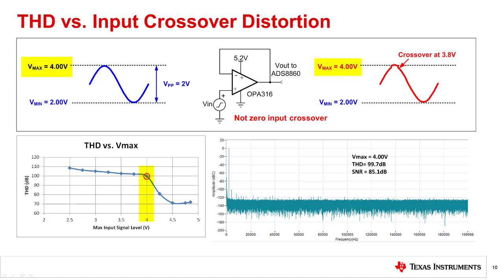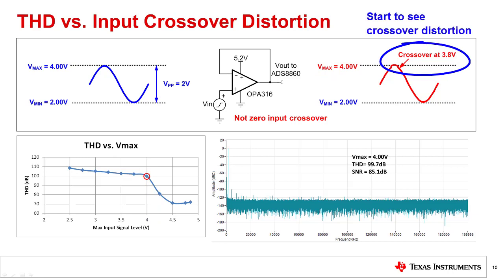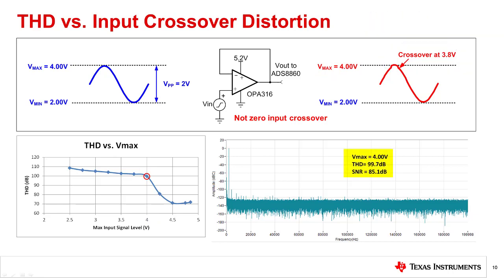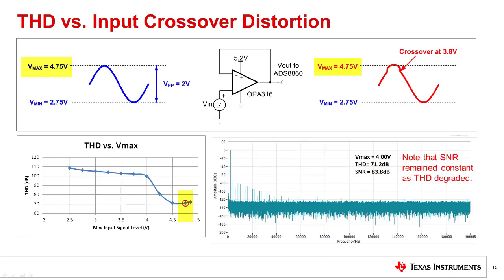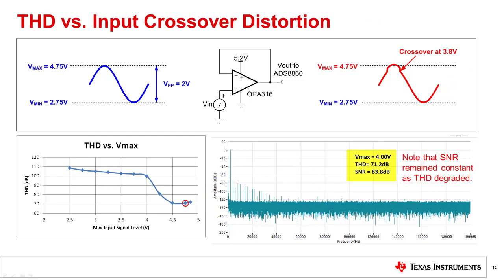Further increasing the common mode voltage to 4 volts begins to show distortion as we enter the crossover region, with THD degraded to 99 dB and SNR at 85 dB. Further increasing to 4.75 volts shows a more dramatic increase in distortion — harmonics become visibly worse, with THD equal to 71.2 dB and SNR equal to 83 dB. The point is not to say you should always use zero input crossover devices. In many cases, the error introduced by input crossover distortion is acceptable. The point is just to be aware of this error source and to avoid it in systems with high performance AC specifications.